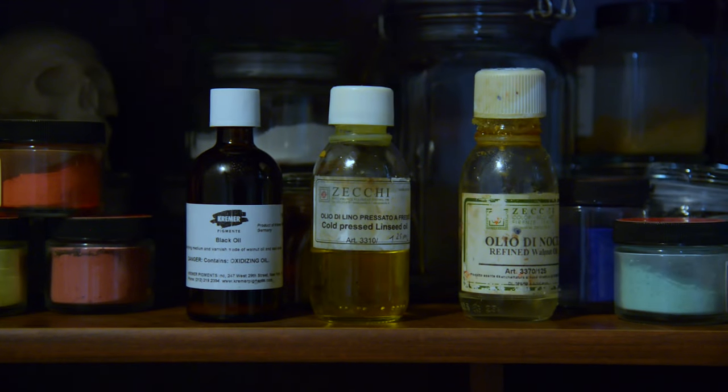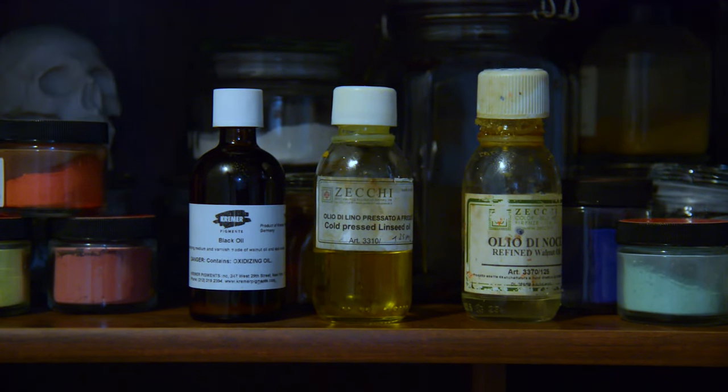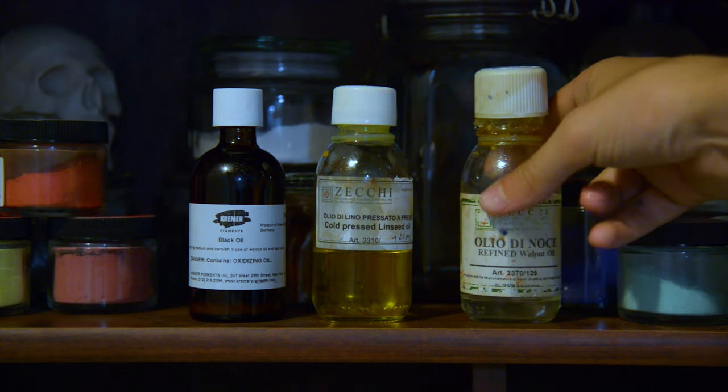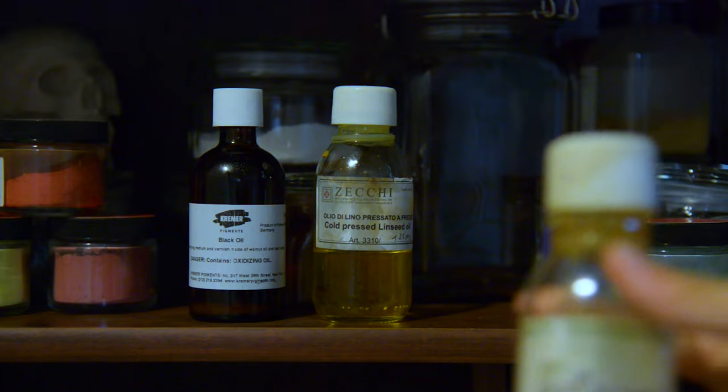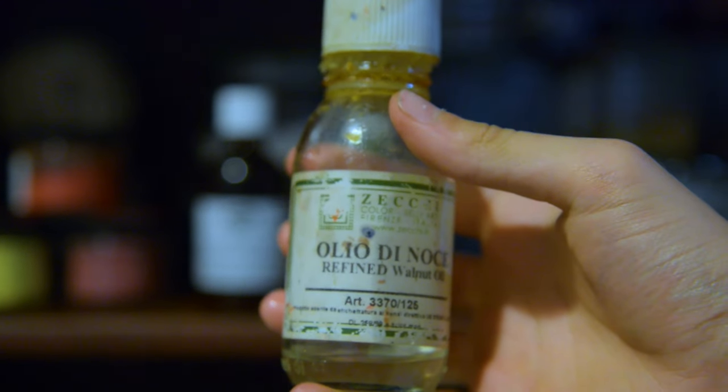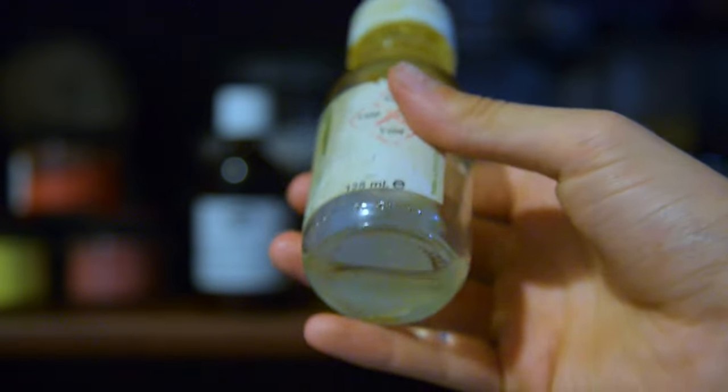Walnut oil is not quite as yellow as linseed oil, and so it's a very good oil to use in the lighter colors that aren't yellow, because it won't have the tendency to yellow the pigments over time. So it's more clear and it's also a slightly slower drier than linseed oil. So if you want a paint that you can come back to for several days and have it still workable, walnut oil would be a good choice.